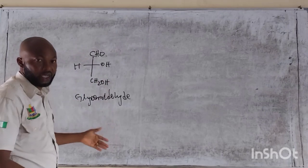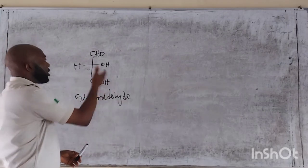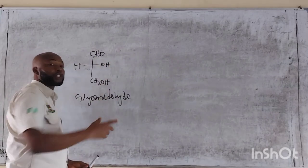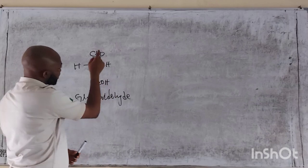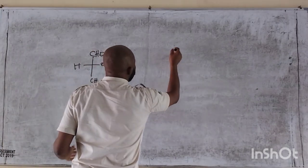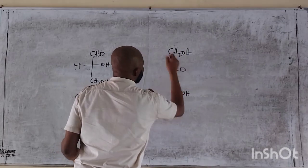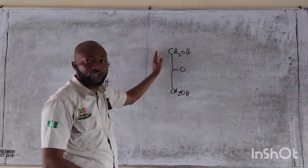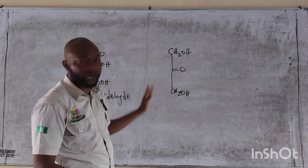These are trioses. This is the first member of the trioses that contains the aldehyde functional group. Those of the trioses that have a ketone group — this one has a ketone group in between, and it is also a triose which means it contains three carbon atoms.